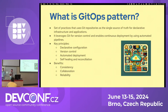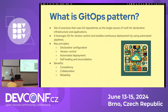Let's start with a description of what we test, how we use it, and we start with the GitOps pattern. What is a GitOps pattern? It's more or less a set of practices where you use Git as a source of truth for all your configuration, declarative infrastructure, and application manifests.